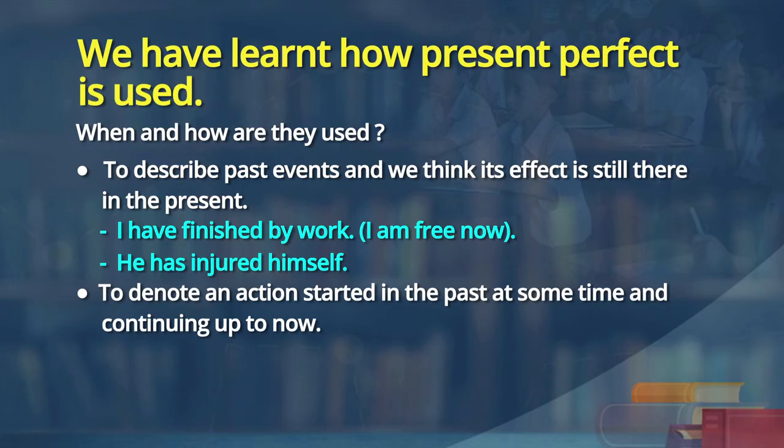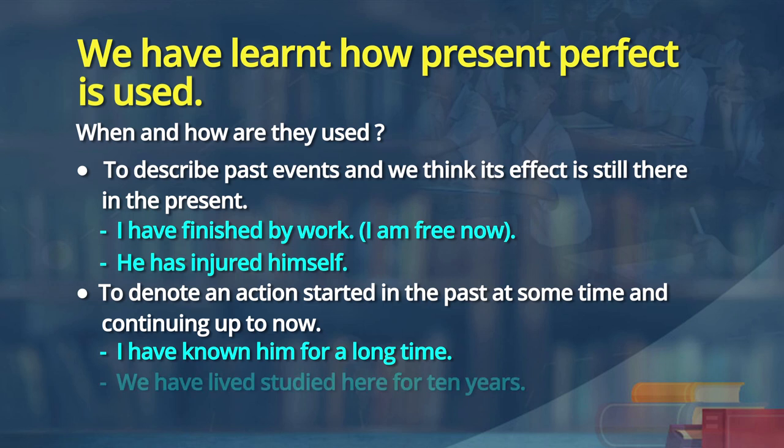The marriage example is much more relevant for the fourth occasion: to denote an action which took place in the past but is continuing now. For example, 'I have known him for years,' 'We have lived here for 10 years.' We can also say 'I have been living in this place' — that is the present perfect continuous form — but present perfect alone can be used that way too. These are the four occasions, learners.